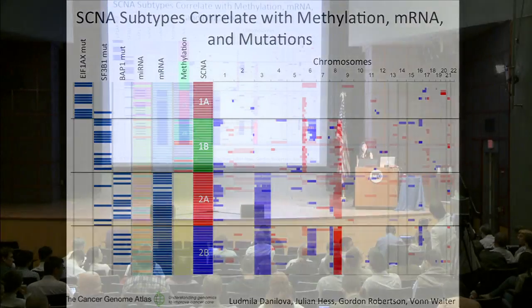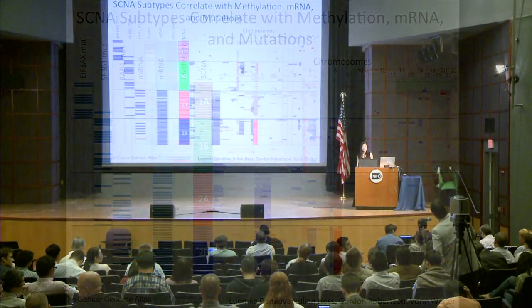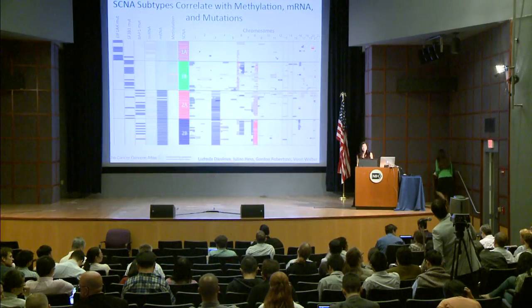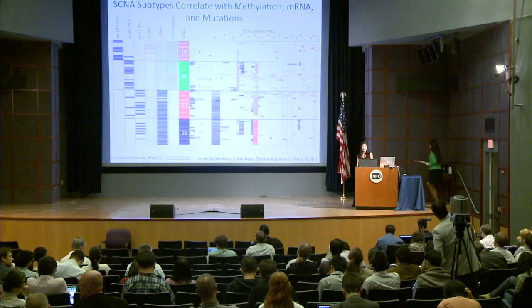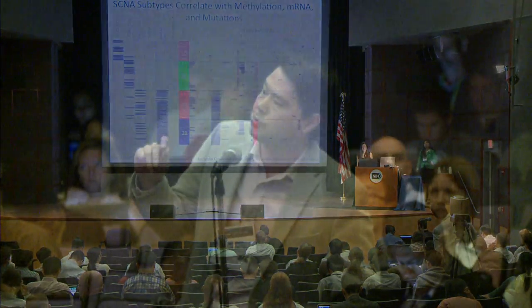Finally, you mentioned that GNAQ and GNA11 had a few co-occurring mutations. Did you notice anything with regards to the type of mutations — were they non-hotspot mutations, or did those patients do worse?